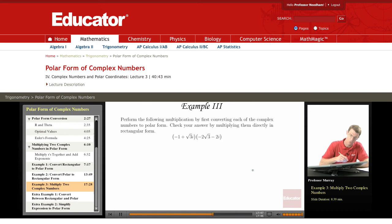So negative 1 plus root 3i. I'm going to figure out my r. My r is equal to square root of x squared plus y squared. Let me write these formulas generically: x squared plus y squared.